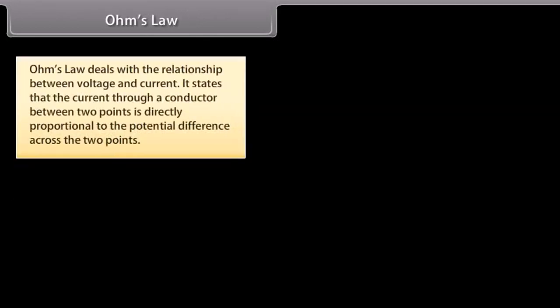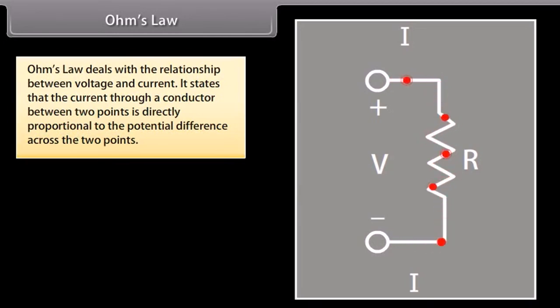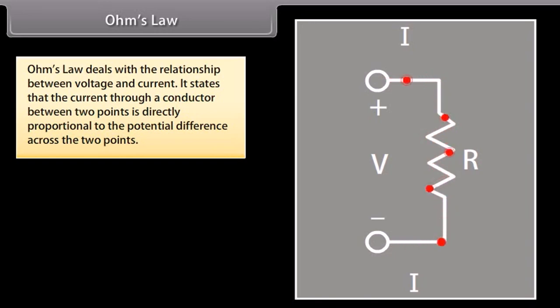Ohm's Law deals with the relationship between voltage and current. It states that the current through a conductor between two points is directly proportional to the potential difference across the two points.